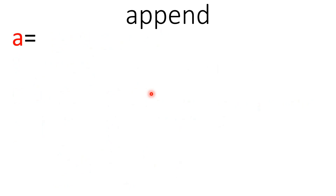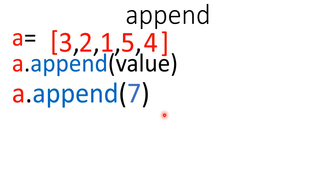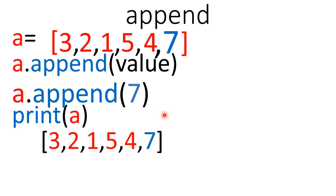Now the append method. You have a list stored in container a. The syntax is: a dot append and then in parentheses the value you want to append. The difference between insert and append is that with insert you can place a value anywhere in the list, but append always inserts the value at the end of the list. For example, a dot append(7) will insert 7 at the end. Print a and you will see 7 inserted at the last position.